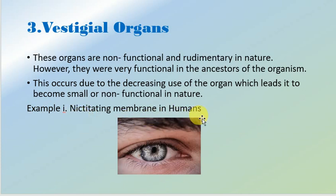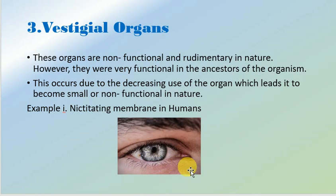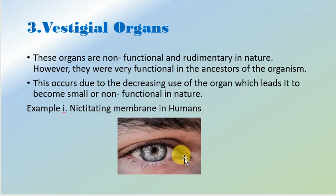The first example is the nictitating membrane in humans. All human beings have an upper eyelid and a lower eyelid, and this pink structured organ is known as the nictitating membrane. In aquatic animals and aquatic birds, this membrane was functional — it protected them while swimming. But in humans, we no longer require it. It is believed that in earlier days, humans had three eyelids: upper eyelid, lower eyelid, and the nictitating membrane.